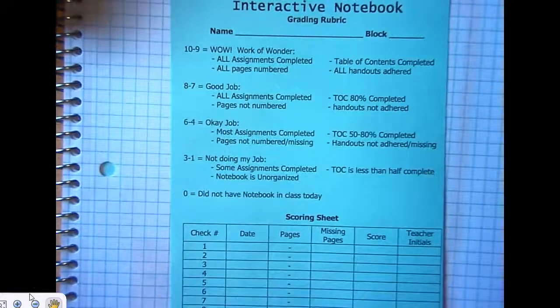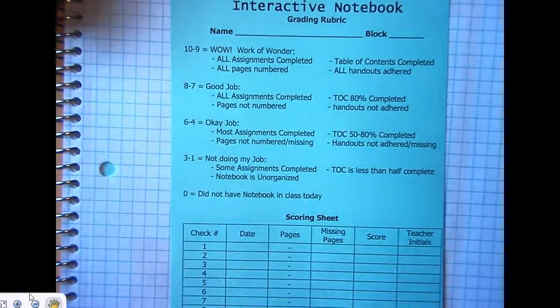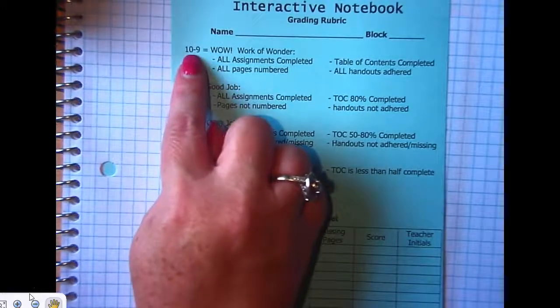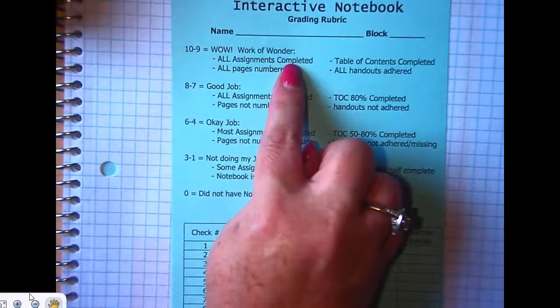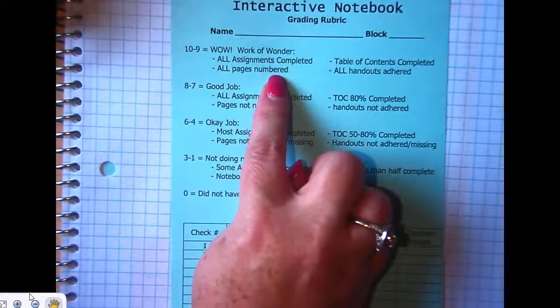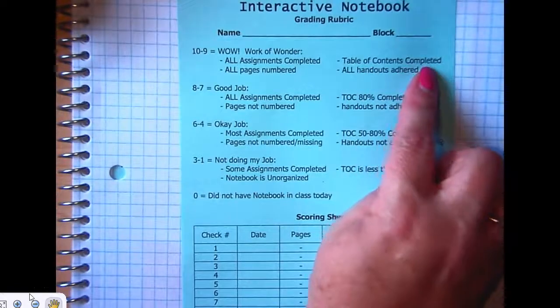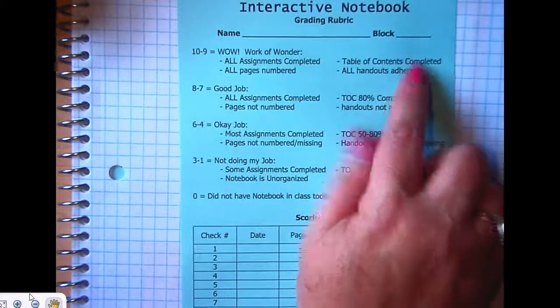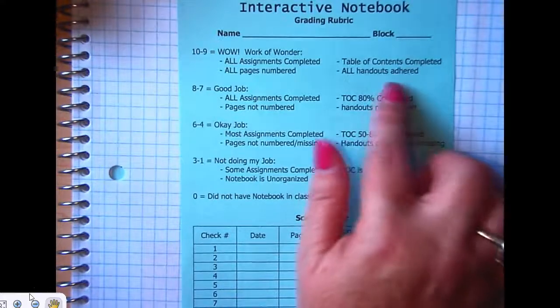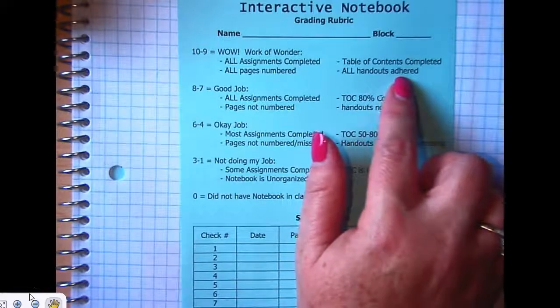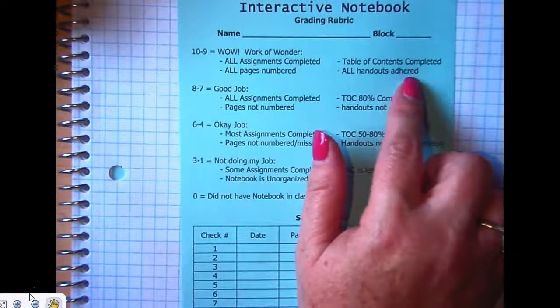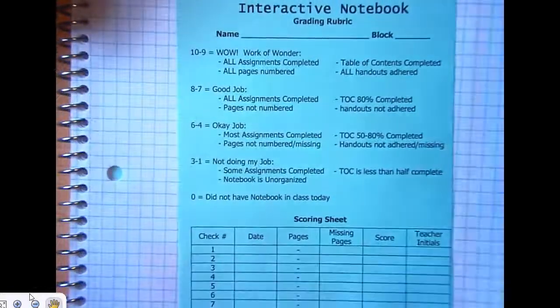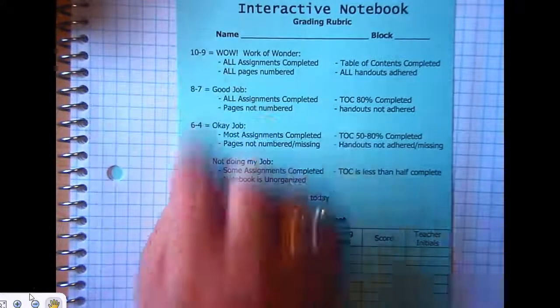Once a month or so, we'll grade your journal. Here are some of the things that we'll be looking for. To make an A, which everyone should make an A because it's just completing your journal. And if you're absent, there'll be a video for you to complete your journal. Make sure that whenever you're absent, you fill in your missing pages. To get 9 or 10 points, which is a 90 to a 100, you have to have all your assignments in it complete. All pages must be numbered. Your table of contents must be completed. And all handouts adhered. What do you think that word adhered means? Chad? Glued in. It's like, have you ever heard the word adhesive? Adhesive, like that's a glue or a tape or something. Adhered is kind of related to that word. All handouts must be glued on or attached.